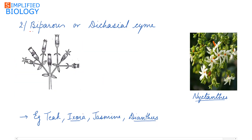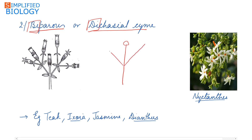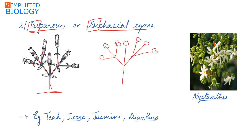Next is biparous or dichasial cyme. 'Bi' or 'di' means 2. The main stem terminates by a flower; from the main stem develop 2 branches that terminate by a flower; from those 2 branches develop 2 lateral branches each that also terminate by a flower. As seen in the diagram, this pattern continues. Such type of sympodial cyme is known as biparous or dichasial cyme.